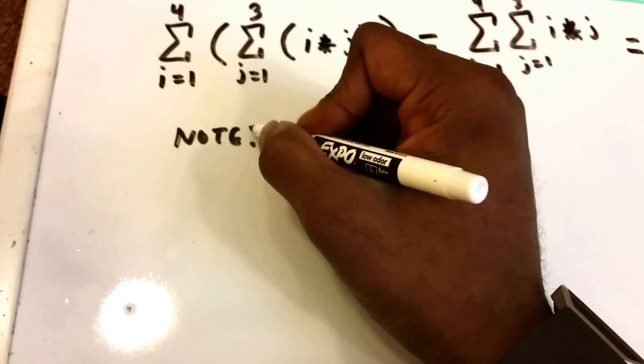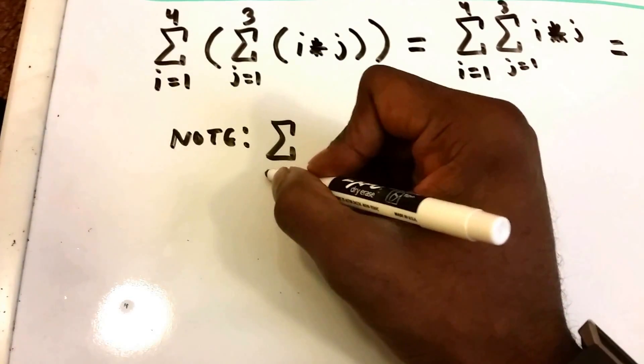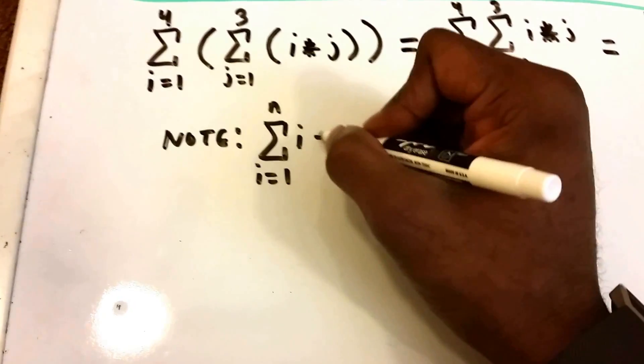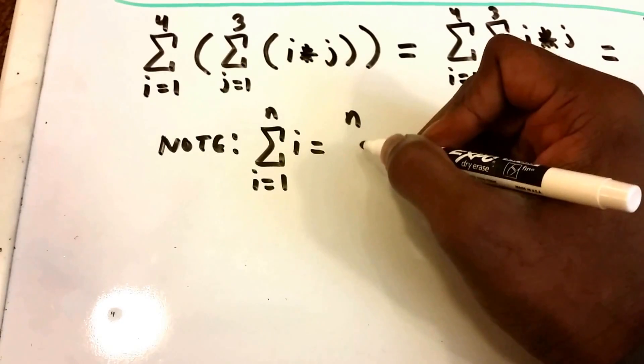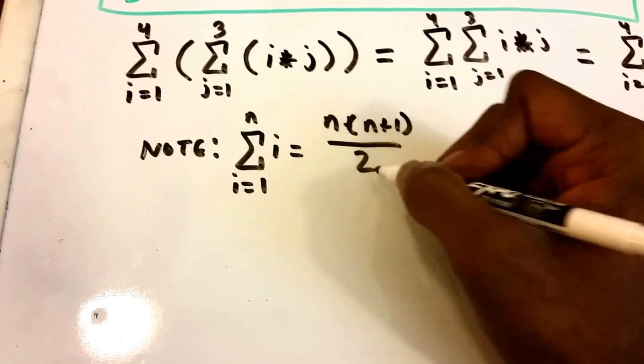And I'll write down the formula, put it here. We really don't even need a formula but I'll go ahead and write it here. So the formula says from i equals 1 to n of i is equal to n times n plus 1 divided by 2.